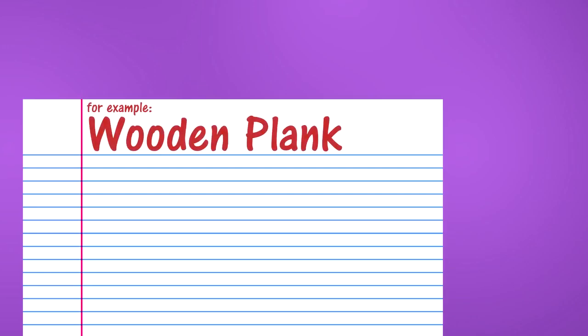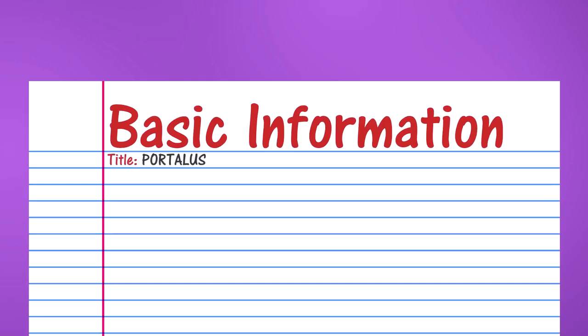For later concepts we won't always do it this way. For example, when we get into items, it'll say 'item names' up there instead of 'basic information.' The first section I'm going to put on this page is 'Name' or 'Title,' and for this we're going to put Portalis. If you don't have a name for your game yet, just leave it blank, or put some indicator so you'll know that section still needs to be filled in when you come back to it.